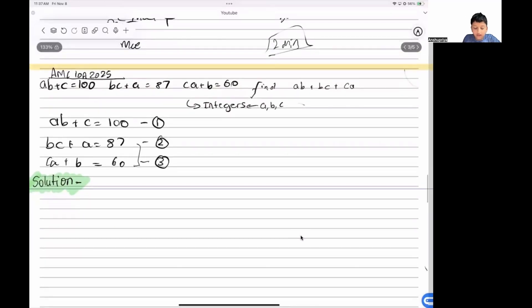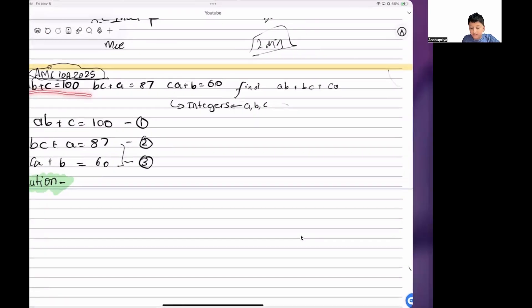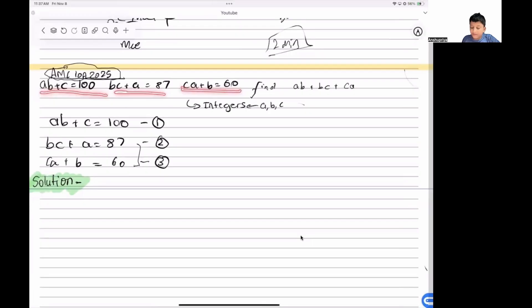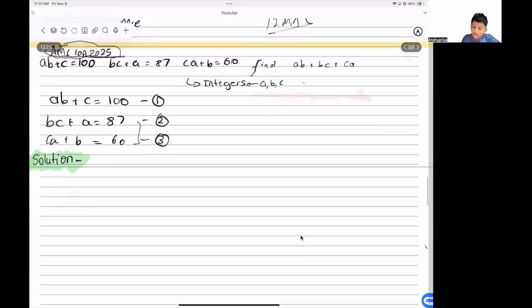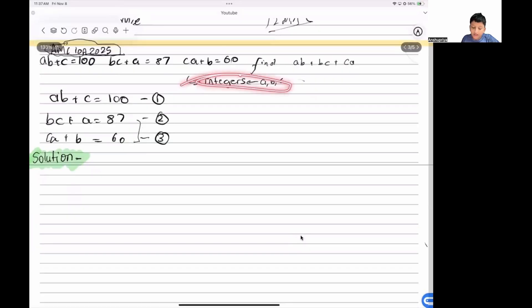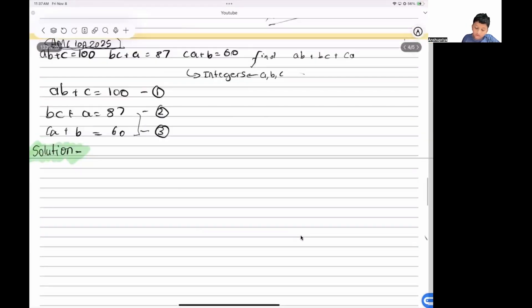Hey guys, today we will be solving an AMC 10A 2025 question. I will tell you the question: ab + c = 100, bc + a = 87, ca + b = 60. Find ab + bc + ca where a, b, c are integers.